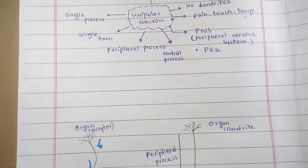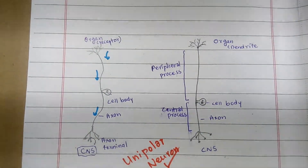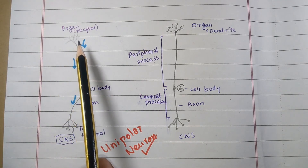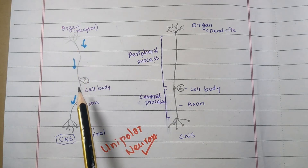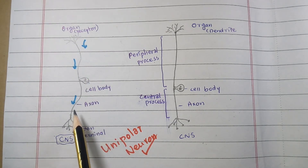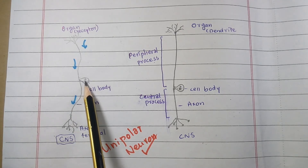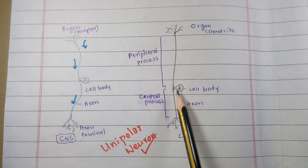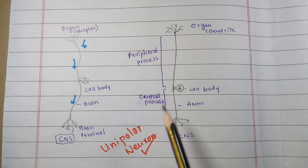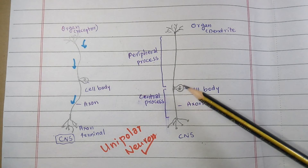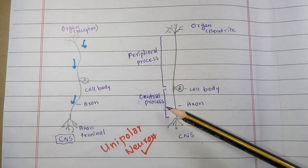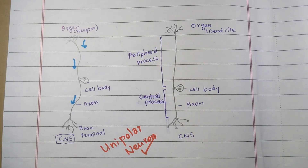Here you can see the diagram of the unipolar neuron. This is the receptor organ from where the sensory signals are received, this is the cell body, and this is the axon which is the process radiating out from the cell body toward the CNS. The central process extends from the cell body toward the CNS, while the peripheral process extends from the cell body to the receptor organ. The peripheral process is usually longer than the central process.